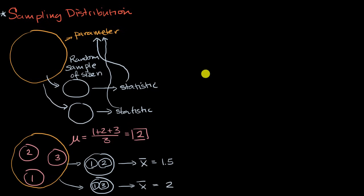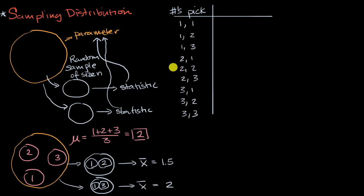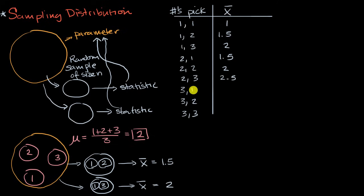Let me draw a table. We pick two balls with replacement, so picks are independent. The possible pairs are: one-one, one-two, one-three, two-one, two-two, two-three, three-one, three-two, and three-three — three possible balls for each pick gives nine combinations. The sample means are: one, 1.5, two, 1.5, two, 2.5, two, 2.5, and three respectively. There are three possible balls for the first pick and three for the second because we're sampling with replacement.